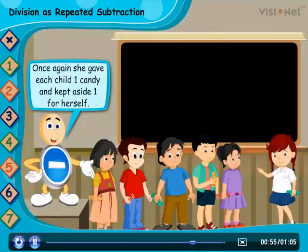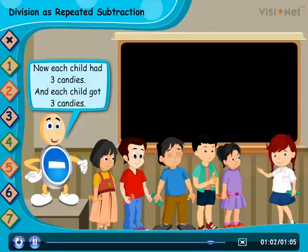Once again she gave each child 1 candy and kept aside one for herself. Now each child has got 3 candies.